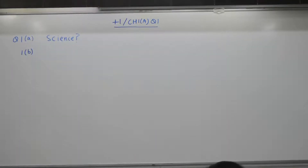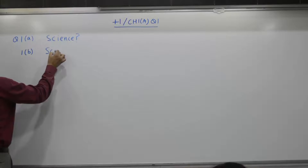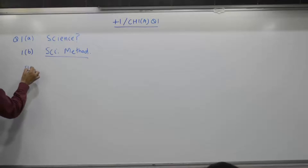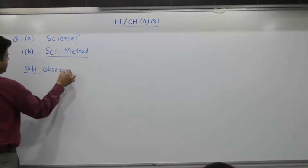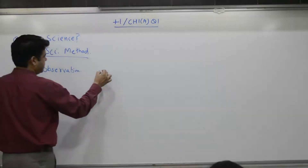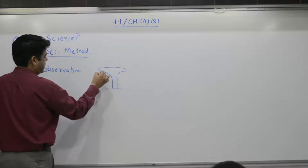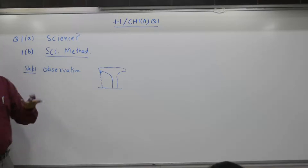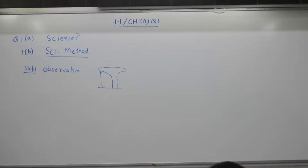Now the scientific method. Step one: observation. What was the observation by Newton? An apple falls from a certain height — height was fixed, a natural phenomenon. So he observed it. The first step is observation. Any scientist will first observe what is going on, with curiosity.